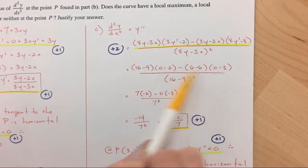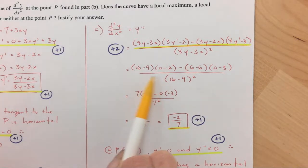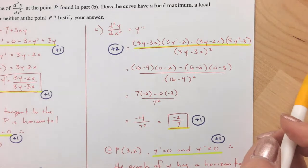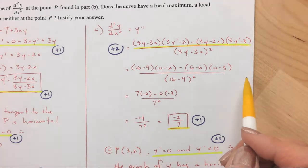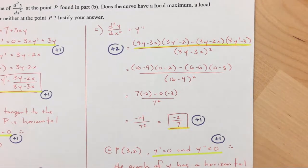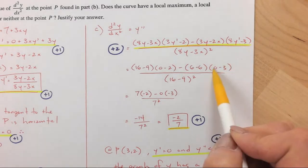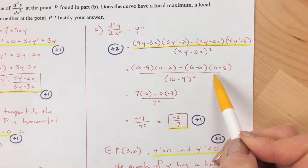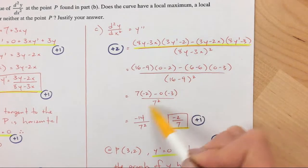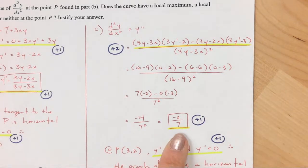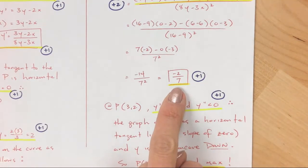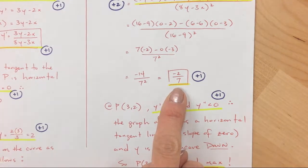And then you plug in your three comma two that you found in the other part. So you plug in three comma two, three for the x, two for the y. And then also y prime, you know as well, because y prime is zero. So you can plug in zero for y prime. See, that's why it's zero. Okay. And then you solve for y double prime, and you get negative two over seven.